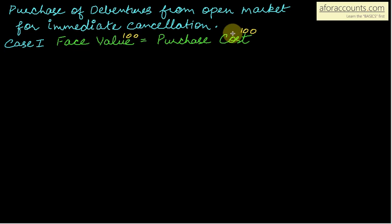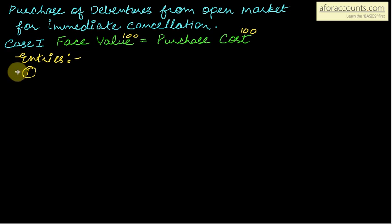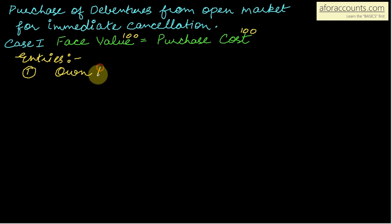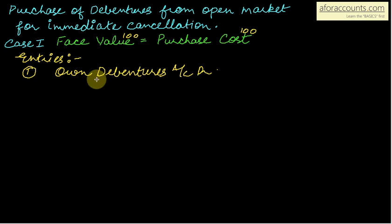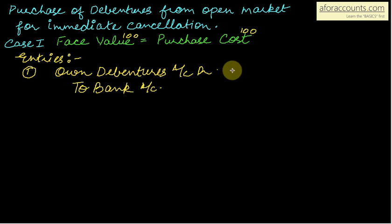In the first case, the journal entries will be: first entry for purchase of own debentures — own debentures are coming in, so the entry will be: own debentures account debit, and you are paying through bank, so to bank account. The entry will be recorded at purchase cost.